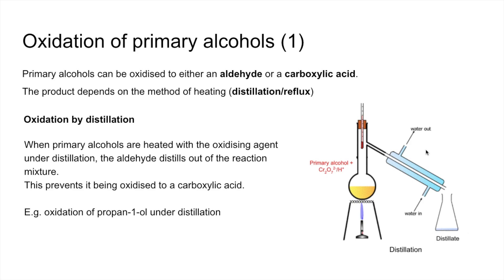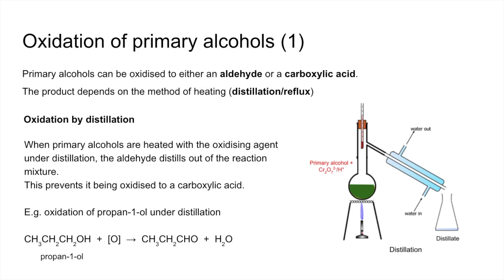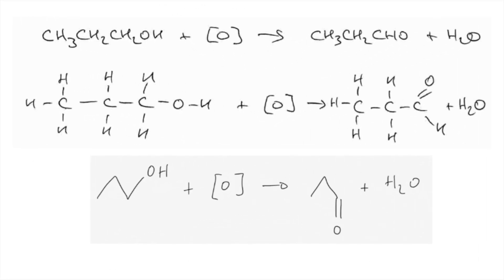The example is propan-1-ol oxidized under distillation to give propanal — and the flask changes to green. There are the displayed formula and skeletal formula forms of that equation.